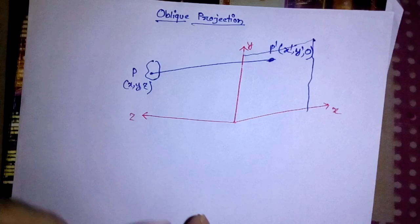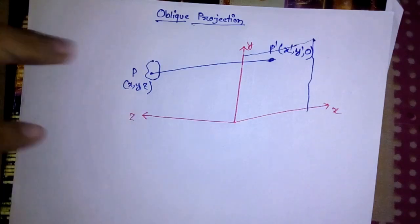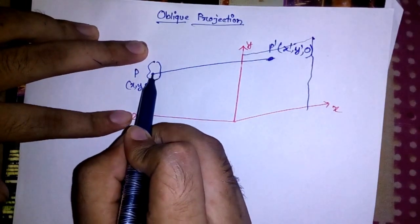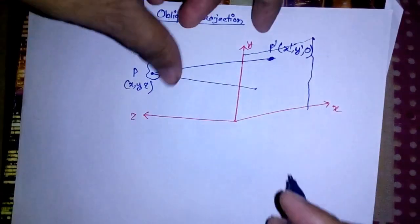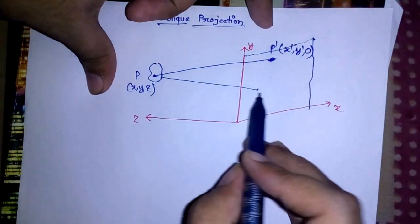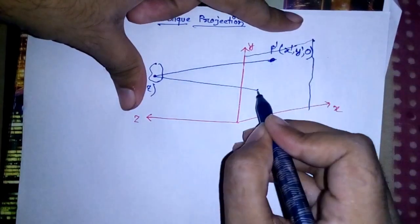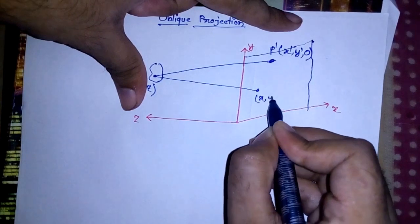For that I'm going to use the result of orthographic projection. If I do the orthographic projection, this point will be somewhat here because that makes a 90 degree angle with the viewing plane. So this is clearly X, Y, 0 because in orthographic projection XY remains the same.